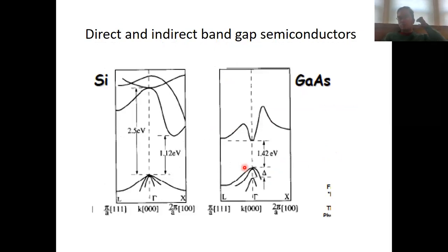The last aspect I wanted to mention is that we should distinguish between so-called direct and indirect bandgap semiconductors. For instance, silicon is an indirect bandgap semiconductor, whereas gallium arsenide is a direct bandgap semiconductor.